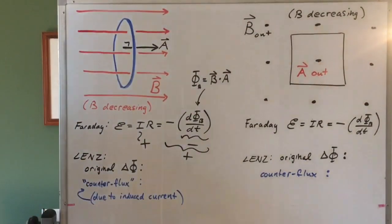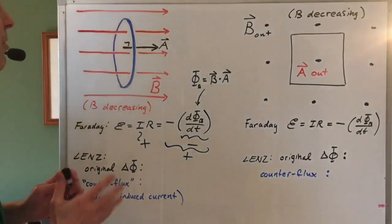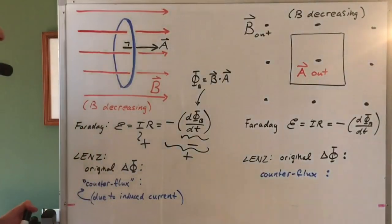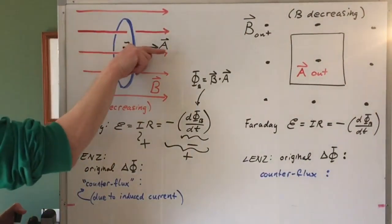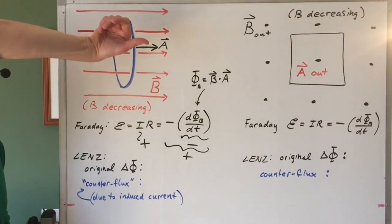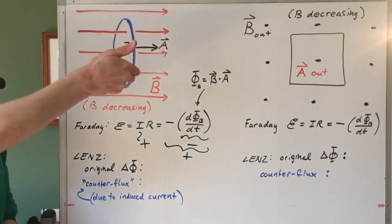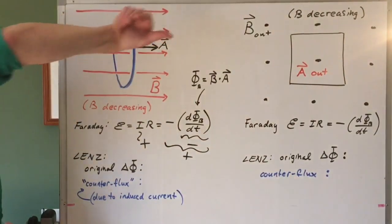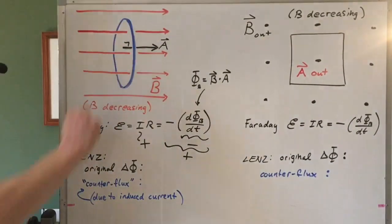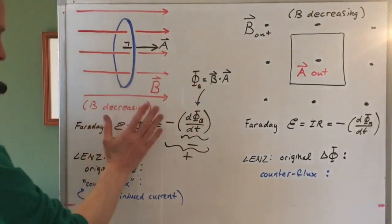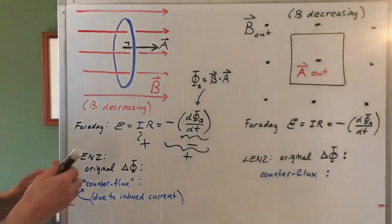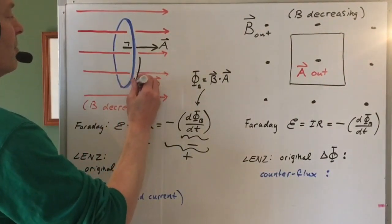Resistance is a positive quantity, so the current must be positive. Now we need to figure out what positive means in this context. Positive and negative for the current is associated with the path direction. Once we pick our area vector, we've associated a positive path direction — stick the thumb of my right hand in the direction of the area vector, fingers wrap around in the sense of the positive path. With this choice of area vector, the positive path direction is down in the front and up in the back. We've deduced that the current must be positive; therefore, the current is going down in the front and up in the back.